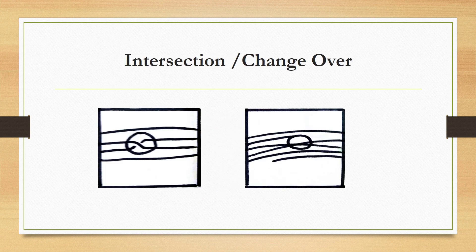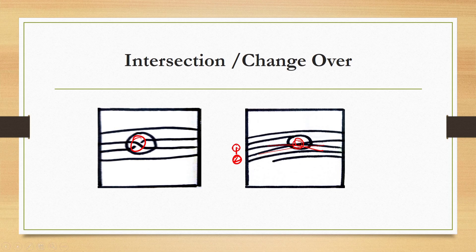Next is intersection or changeover. It is formed when two adjacent ridges change their places by crossing over each other, changing their position by intersecting.